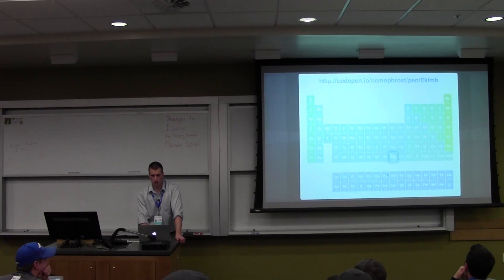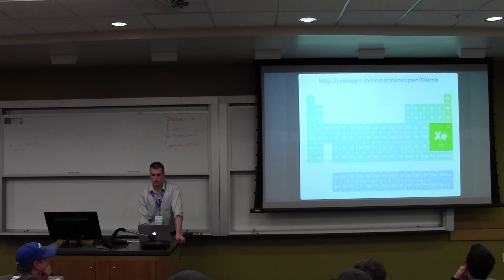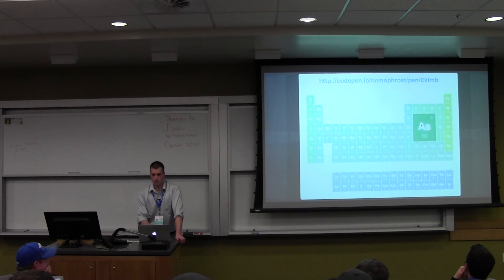Once again we end up with our periodic table. If you look at my example you'll see I did something a little differently so that the edge pieces don't blow up centered like the rest — they blow up along the edge or in the corner. I didn't cover that, but that's another set of nth-child selectors. There you have it.